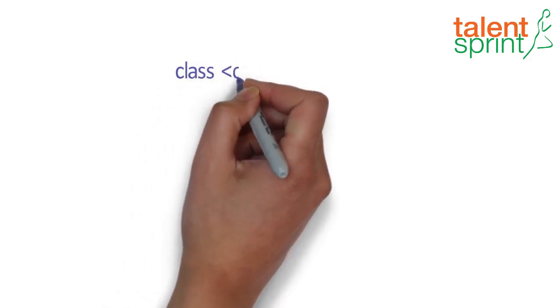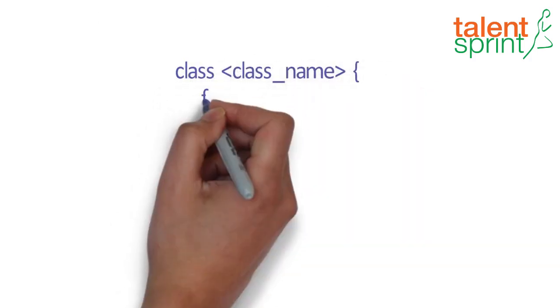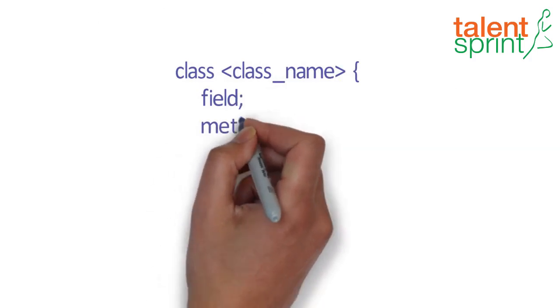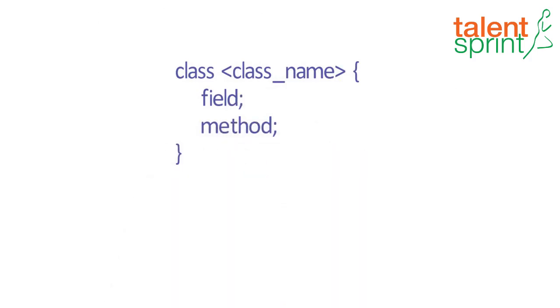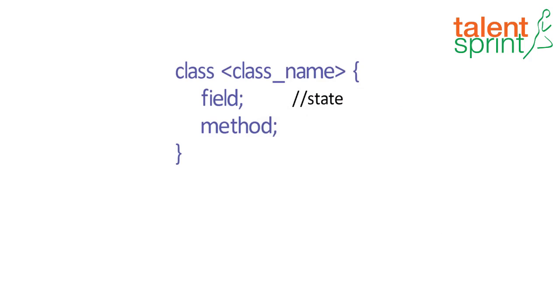The syntax for defining a class is fairly simple: the class keyword followed by the class name, and within the curly braces we list down all the fields, that is state, and the method, that is behavior.